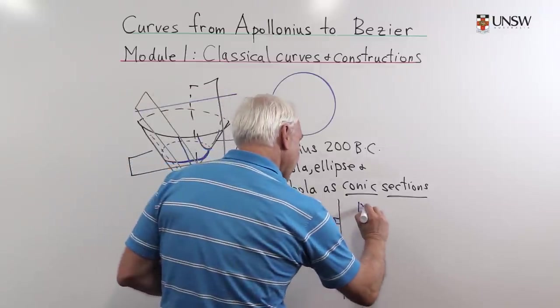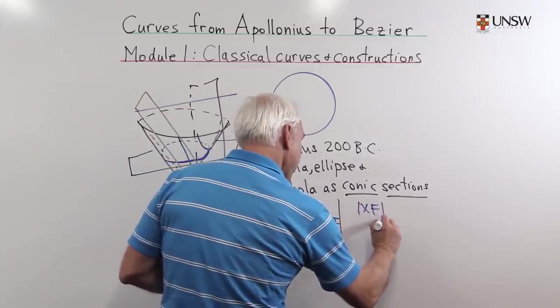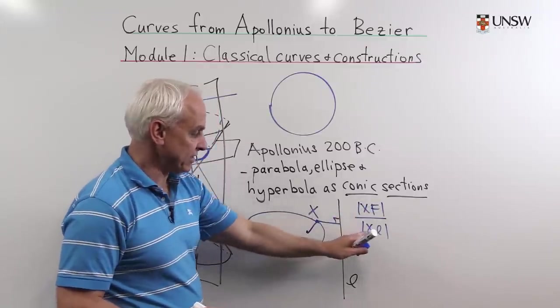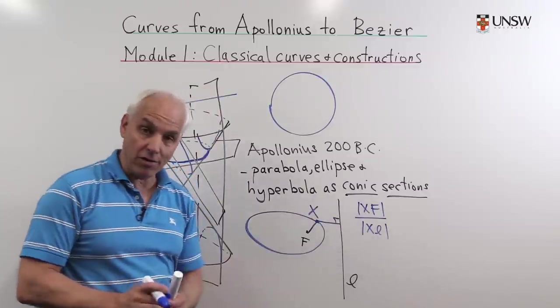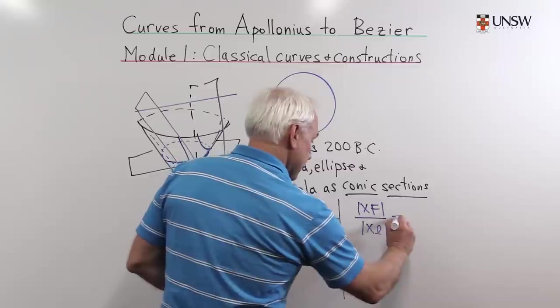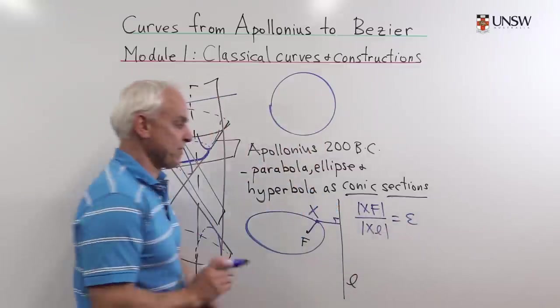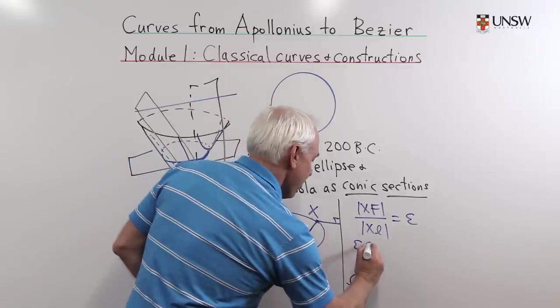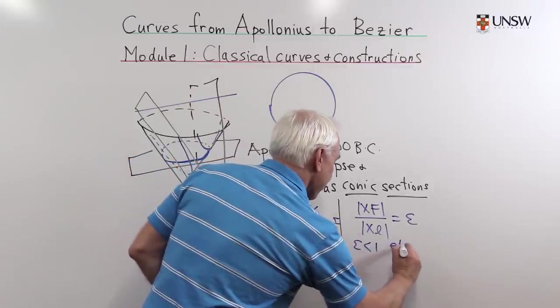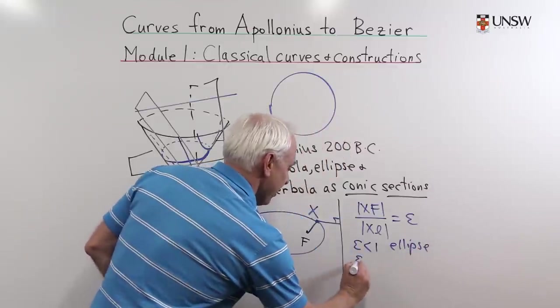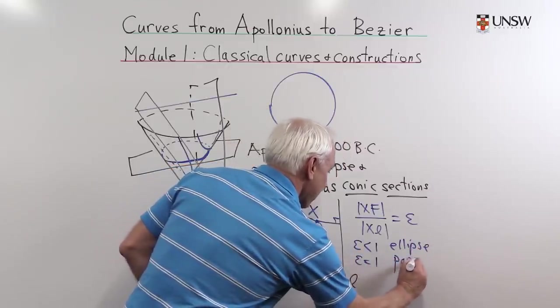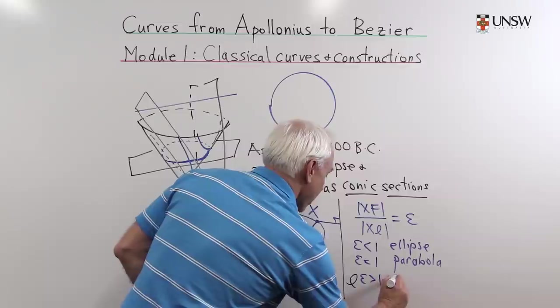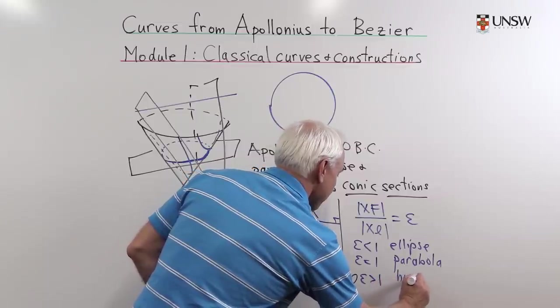If we're looking at the distance XF to XL—so here's the distance from x to the focus and here's the distance from x to the line L measured perpendicularly—if that's say epsilon, then we get an ellipse when epsilon is less than 1, a parabola if epsilon equals 1, and a hyperbola if epsilon is greater than 1.